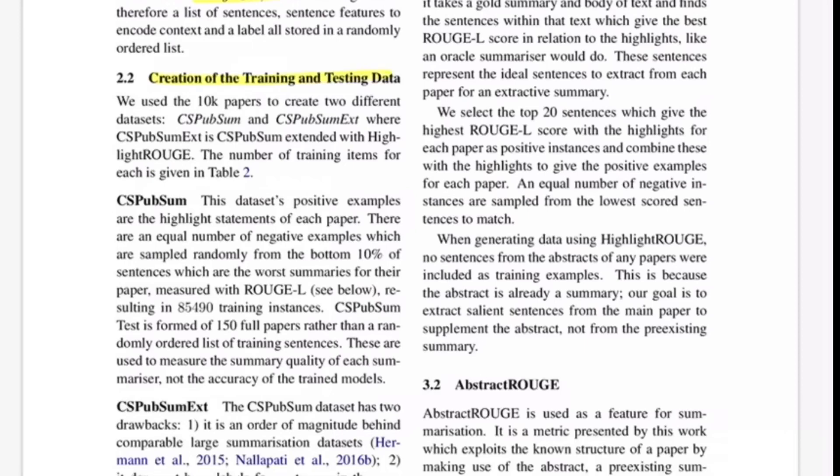Authors talk about creating testing and training datasets. They're using 10k papers divided into two parts: CSPubSum and CSPubSum-ext which is the extended list. Since they're treating this as a supervised learning problem, for CSPubSum they already have actual labels which are sentences from the highlights. But they had to generate negative samples as well. They generate equal number of negative samples randomly sampled from bottom 10 percent of sentences which are worst summaries in the paper, using the metric ROUGE-L.